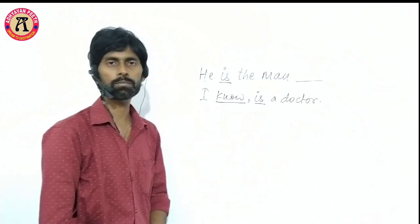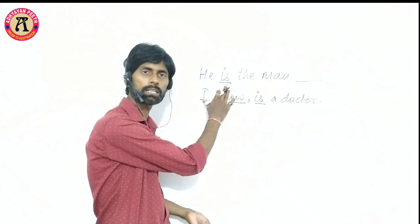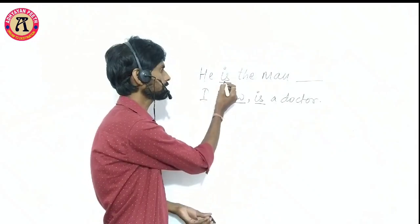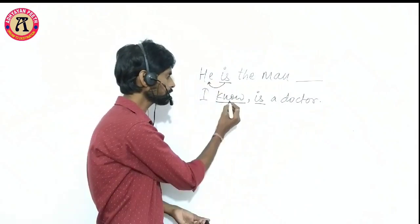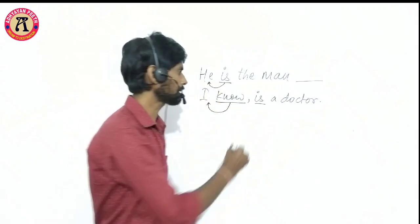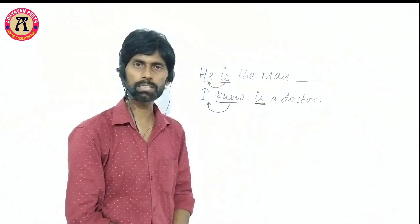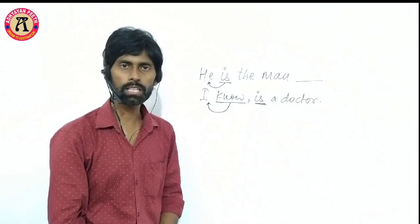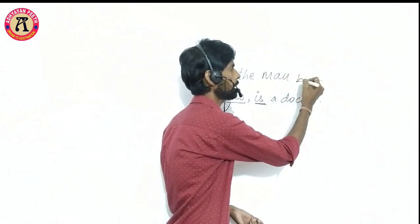Now we will see which verbs have a subject and which do not. 'Is' has its subject, 'know' has 'I' as its subject, but the third 'is' has no subject assigned to it — so it needs one. When a verb has no subject, we use who. So here we can use who.